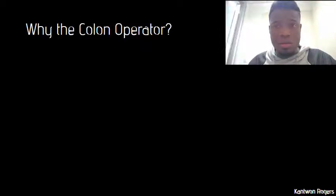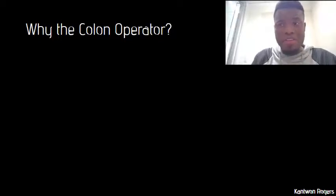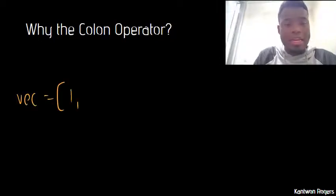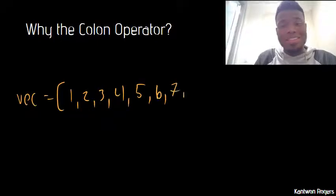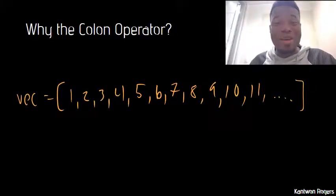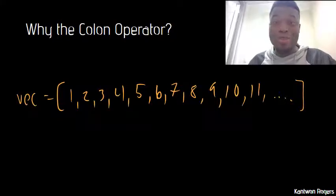Right now, we only know how to use the direct entry method and concatenation. So if I wanted to create a vector that was all the numbers between one and a thousand, I would have to directly enter all one thousand numbers. And I don't know about you, but I'm not trying to do that. So therefore, that's why we need an easier way to do that. And that way is with the colon operator.